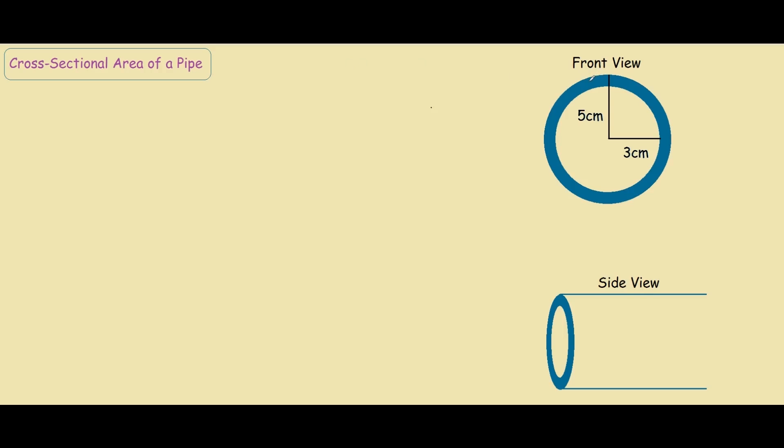So over here we have the front view of a pipe, with its outer layer at 5cm from the center of the circle, and the inner rim is 3cm to the center of the pipe.